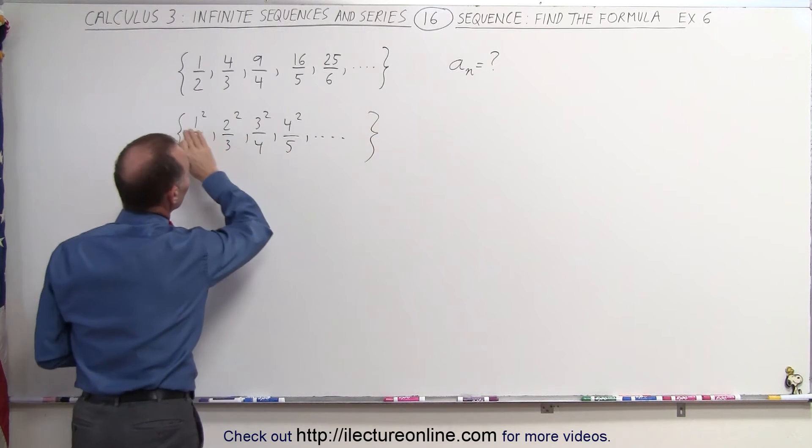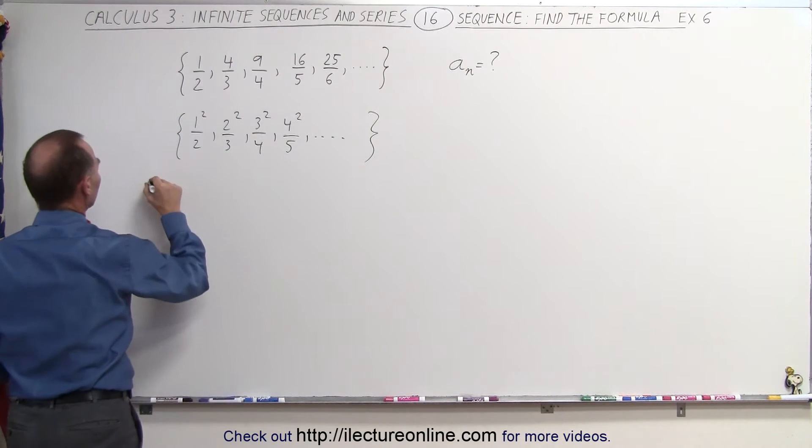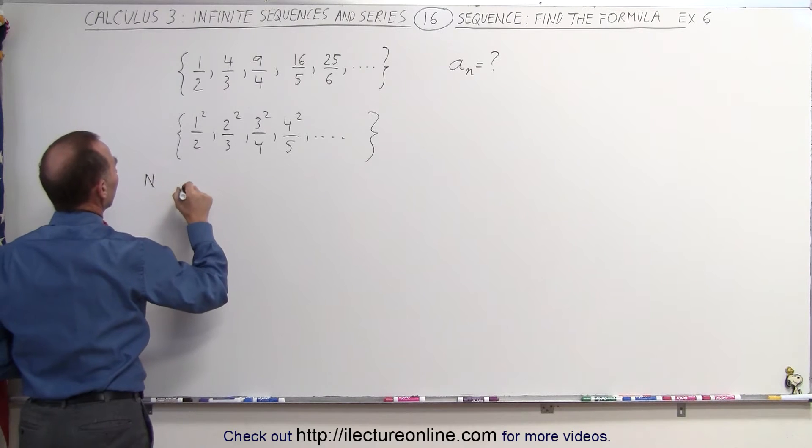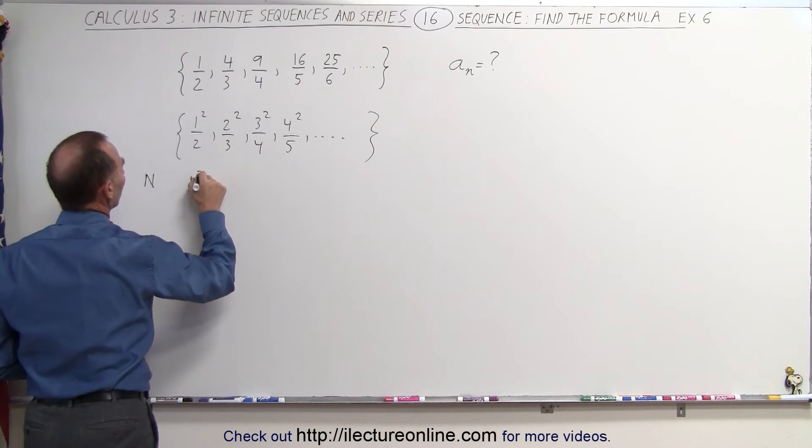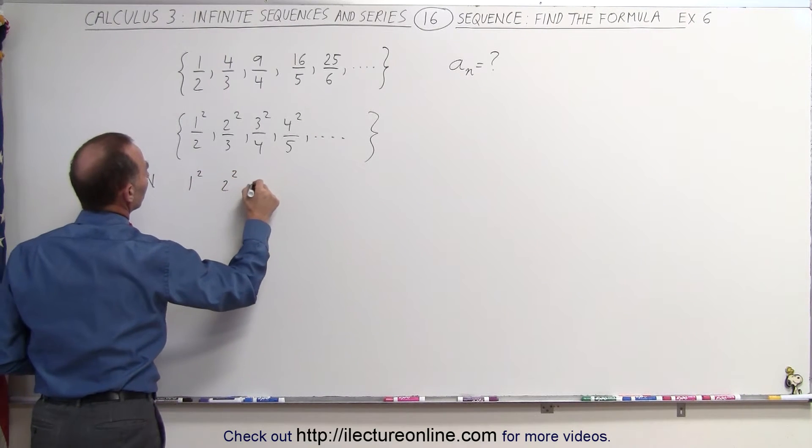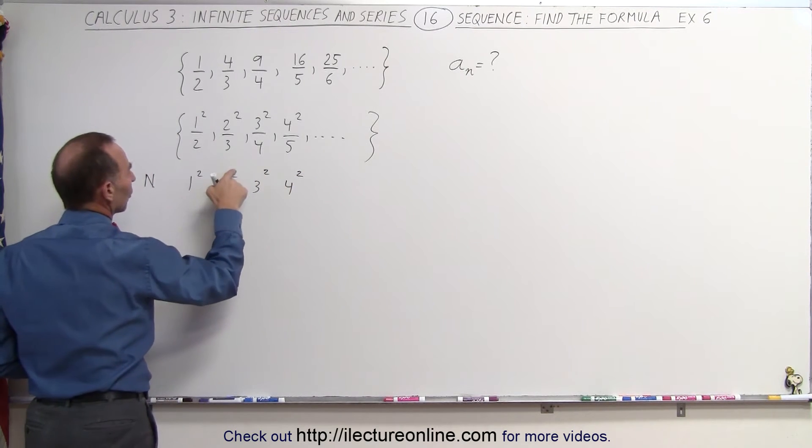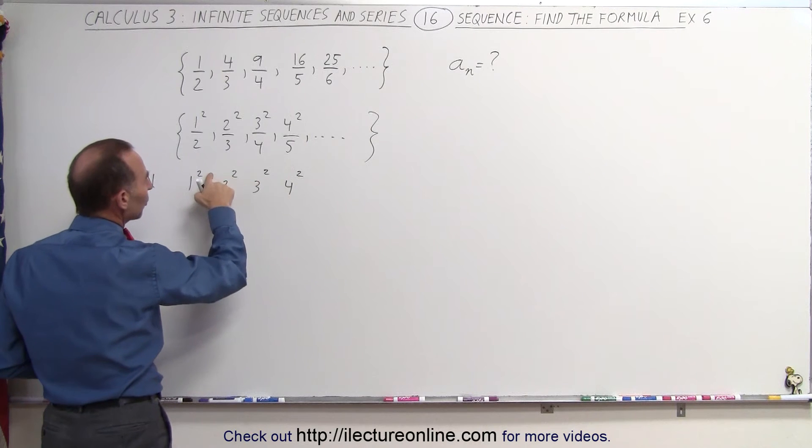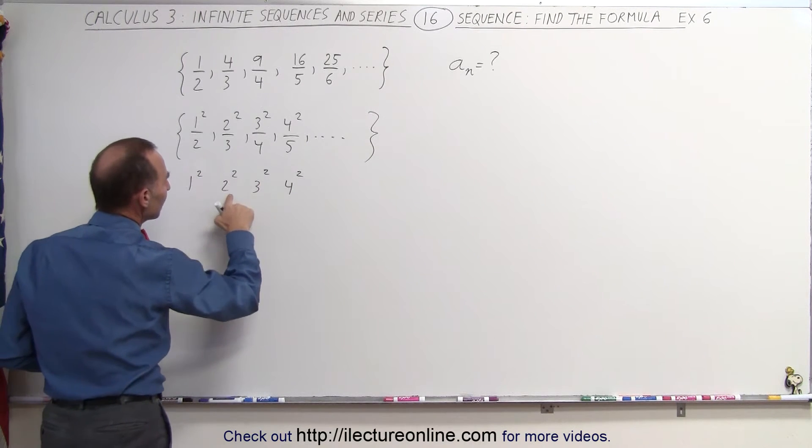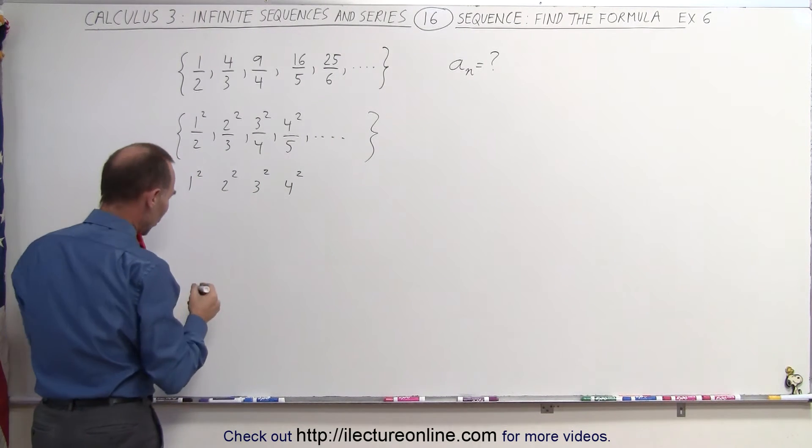So we now know that we can write the numerator as follows. The numerator can be written as 1 squared, 2 squared, 3 squared, 4 squared. And notice that the exponent doesn't change, but the base does change, increases by 1.